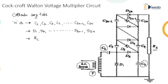The input to the transformer is AC supply and the output across the capacitor gives double the voltage, as already explained in the previous lesson. This voltage becomes twice V. With respect to ground, the voltage across capacitor C4 becomes four times V. Voltage across C6 with respect to ground becomes six times V, and so on, so that the voltage can be multiplied.